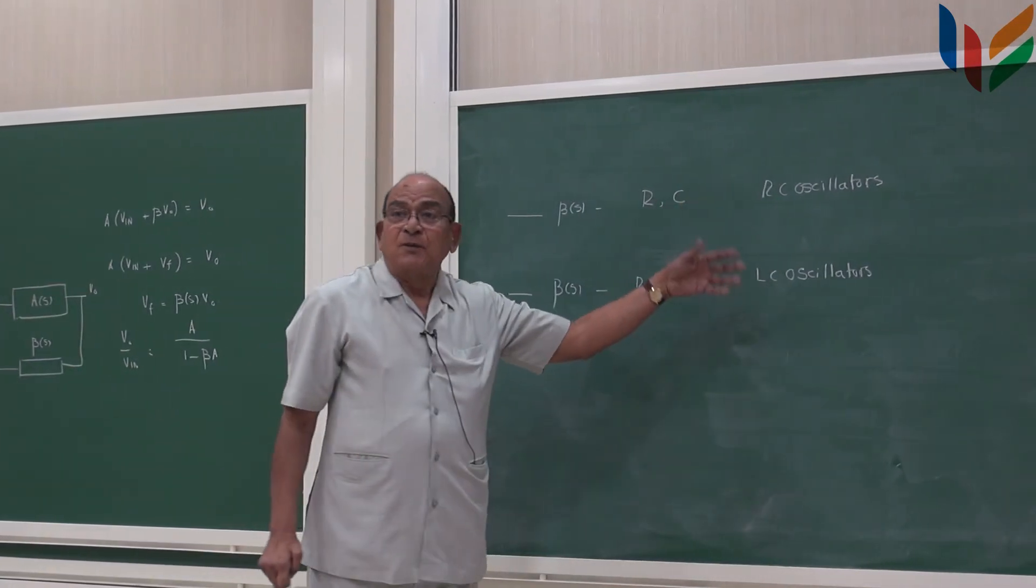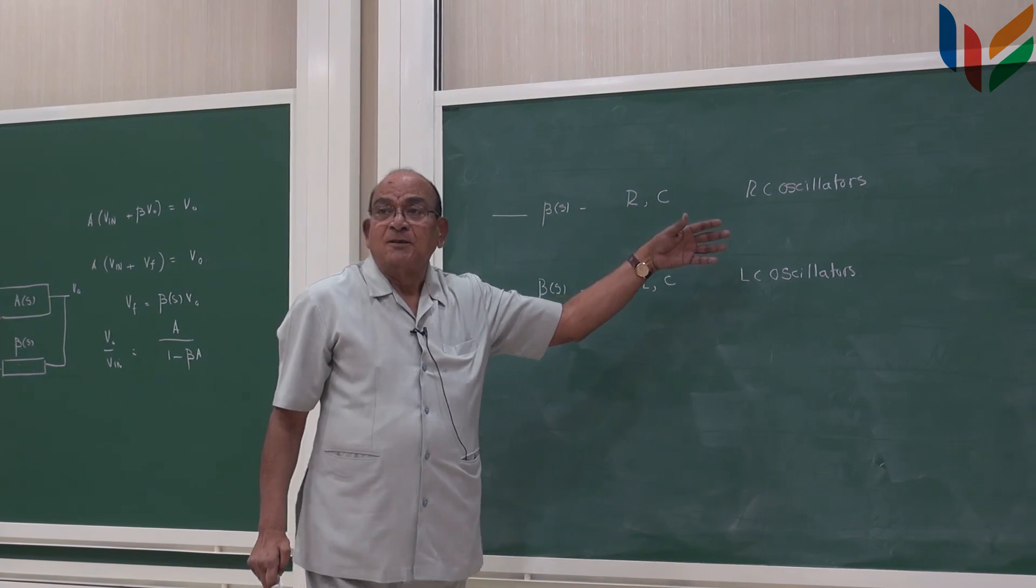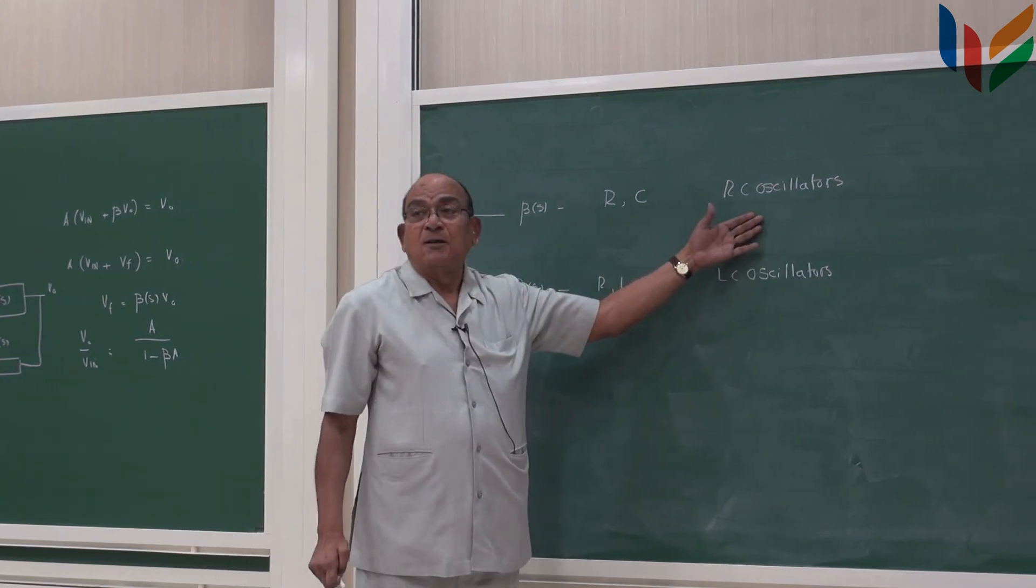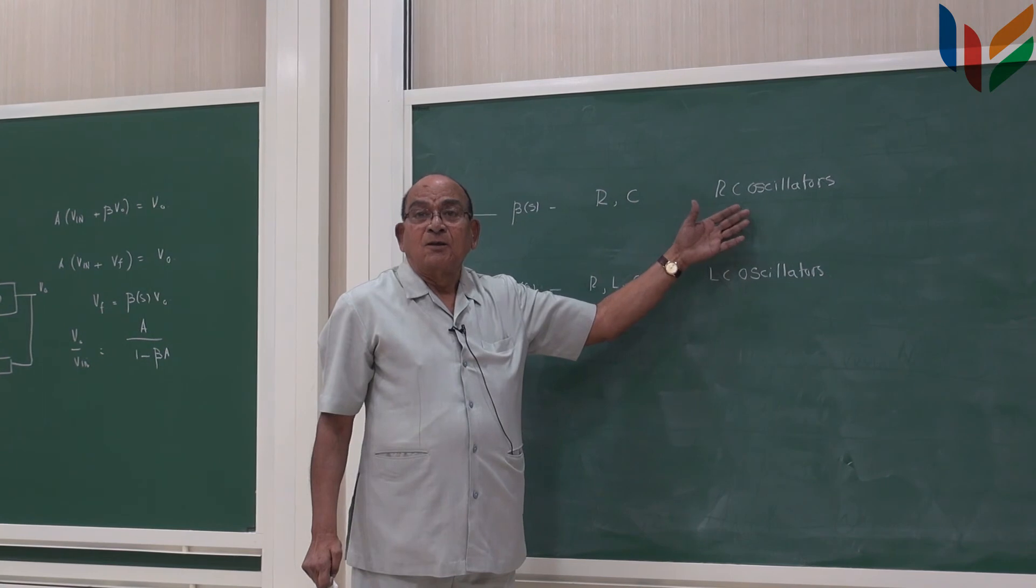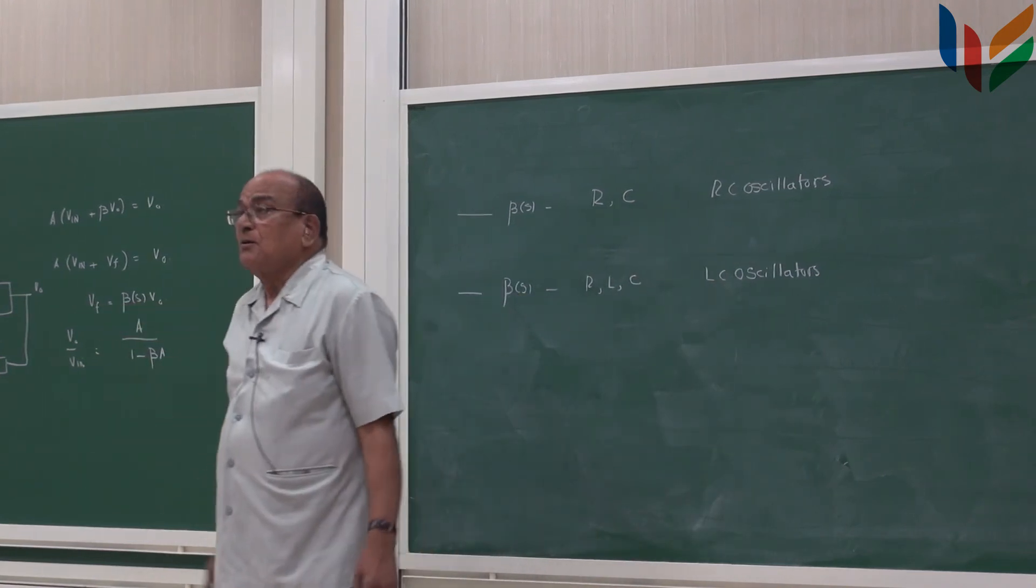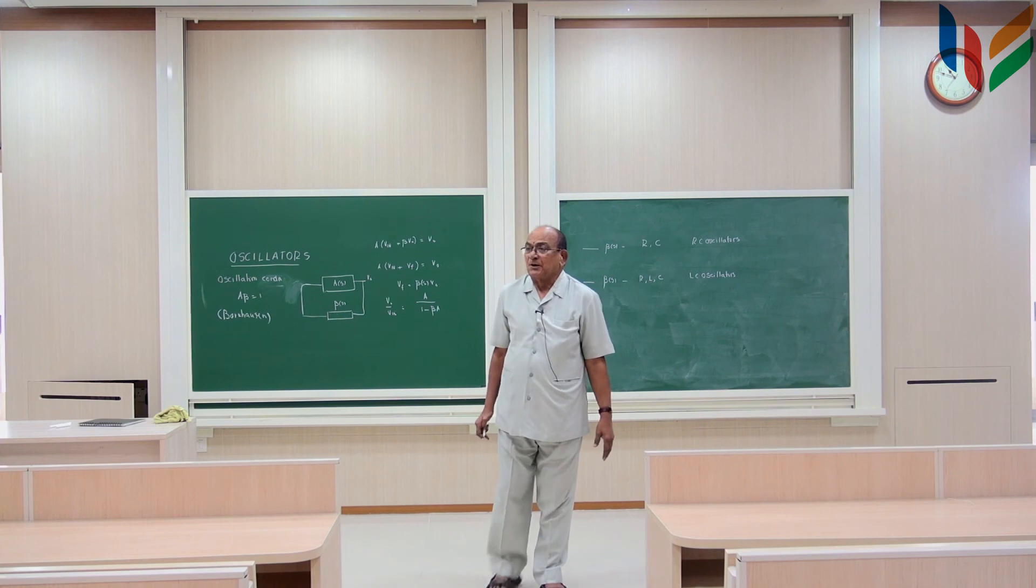The choice is infinite choice, right? You can choose any RC network as long as you satisfy that condition, you will be able to see that network oscillates.